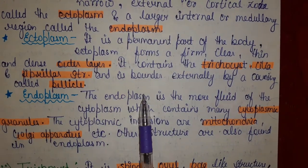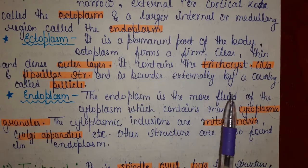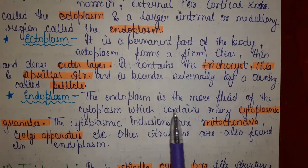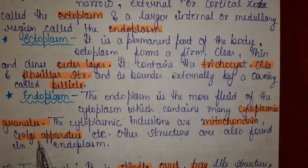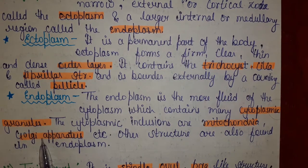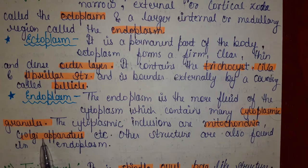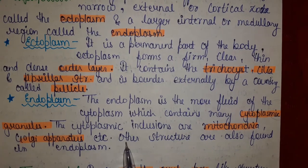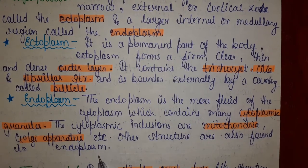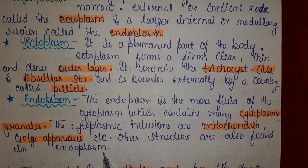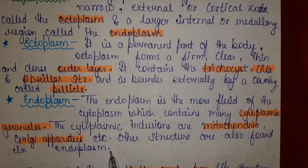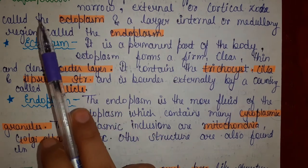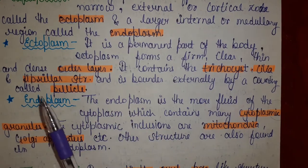The endoplasm is the more fluid part of the cytoplasm, which contains many cytoplasmic granules such as mitochondria, Golgi apparatus, etc. Other structures are also found in the endoplasm. This is our cytoplasm, divided into ectoplasm and endoplasm.